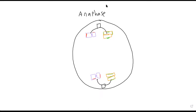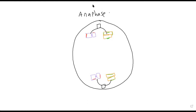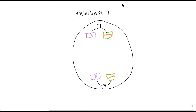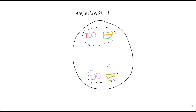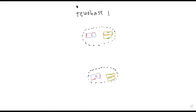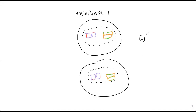In the interest of time I'm going to draw telophase 1. In telophase 1 — similar to telophase of mitosis — the meiotic spindle breaks down, a new nucleus reforms around the separated pairs of sister chromatids, and you have cytokinesis where the cell becomes two new smaller cells. This is the end of meiosis 1.